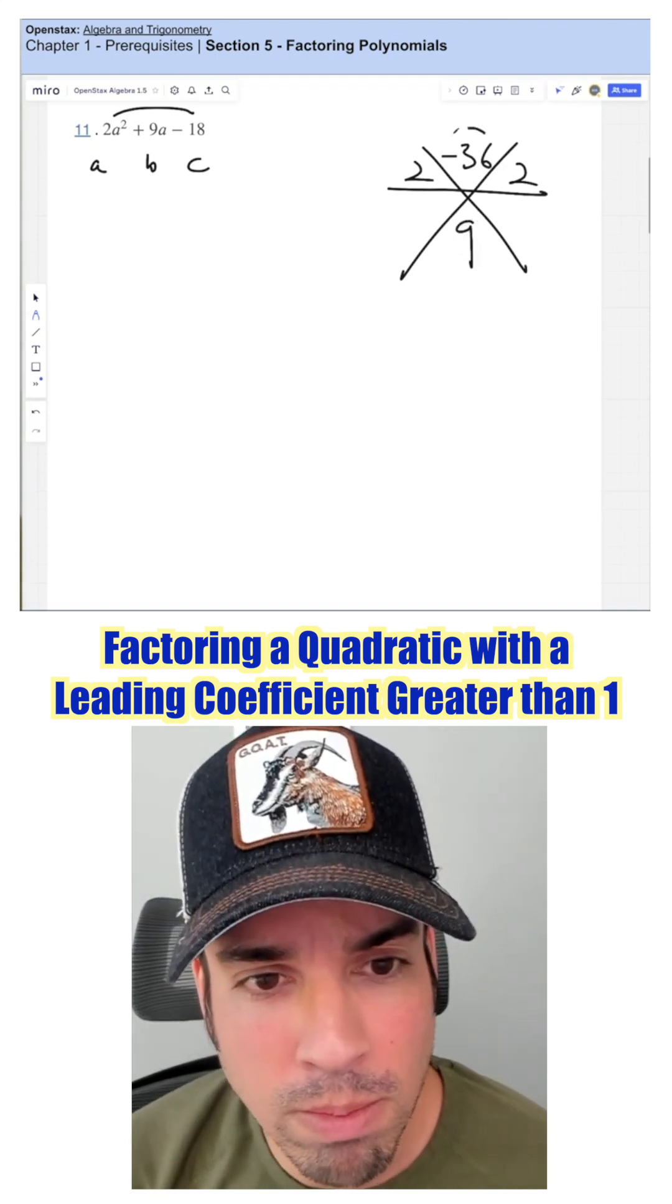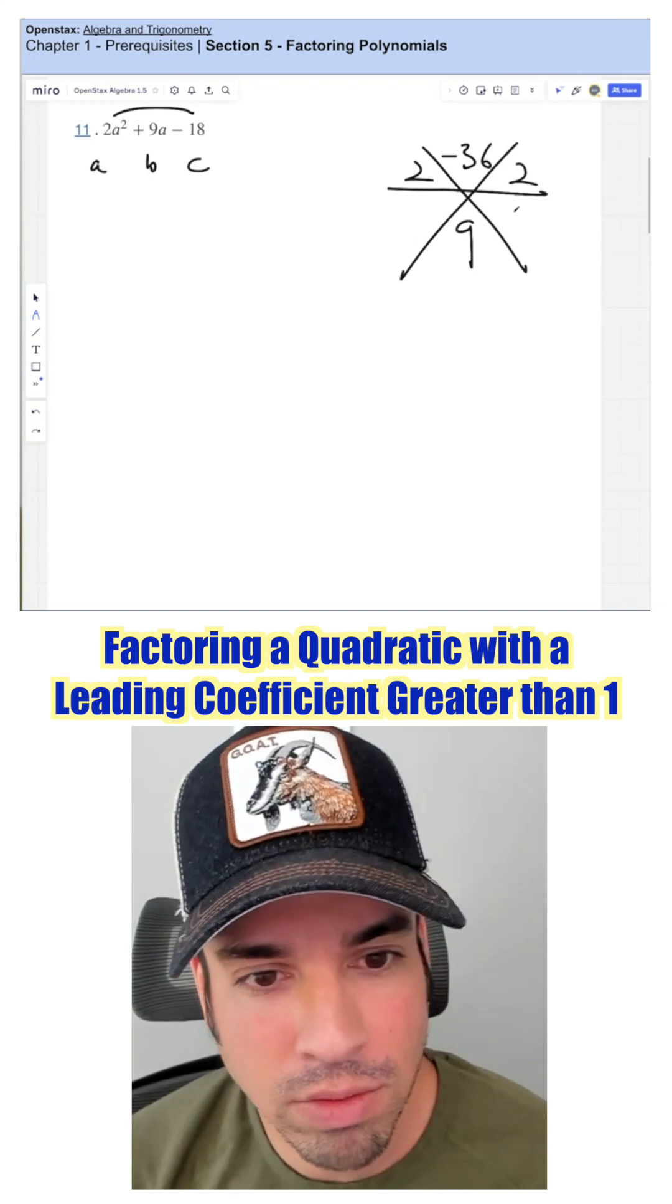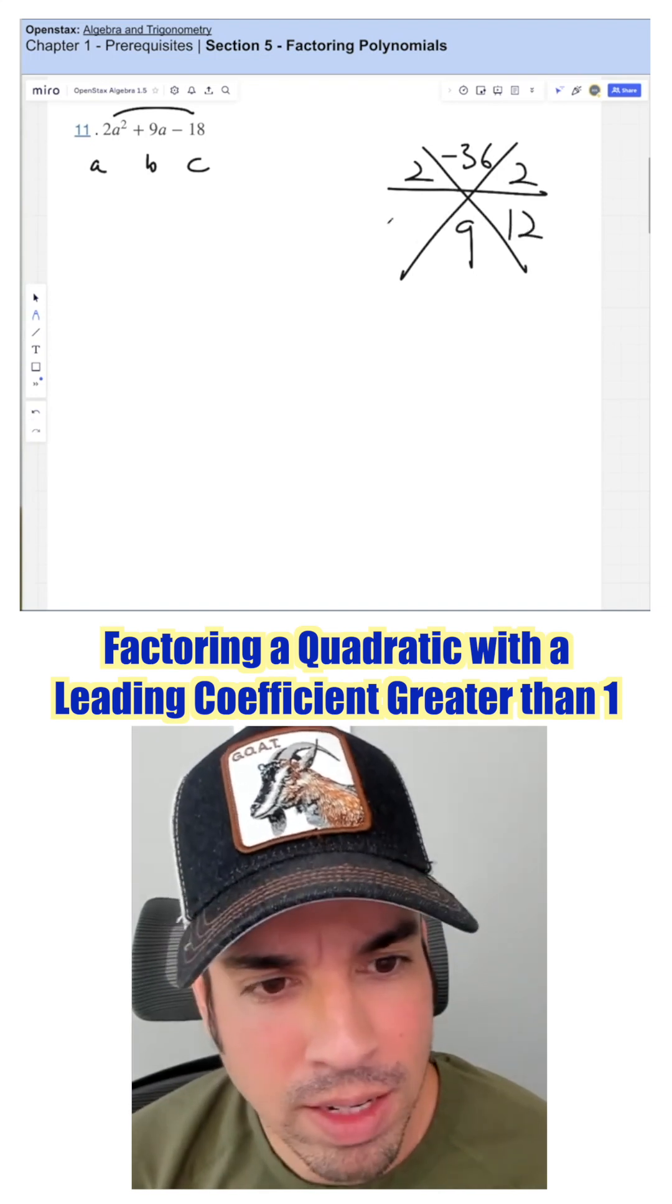Then I ask the question, what two numbers multiply to negative 36 and add to 9? That is, of course, 12 and negative 3.